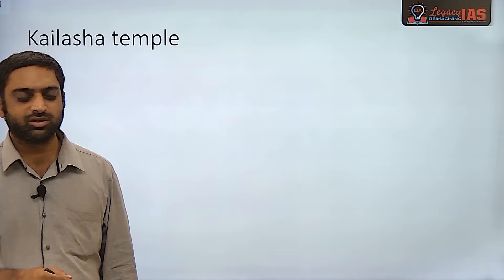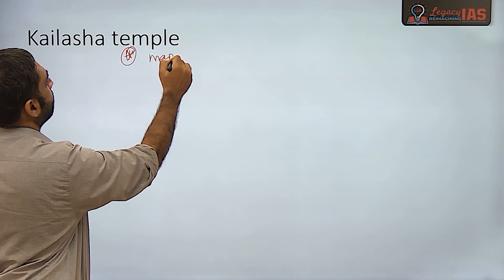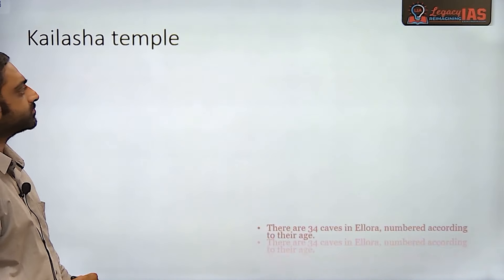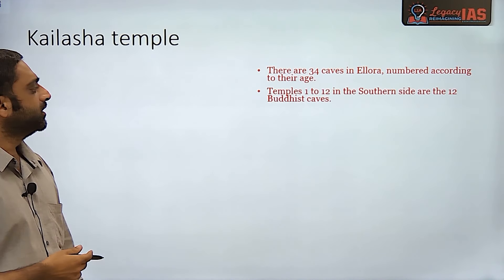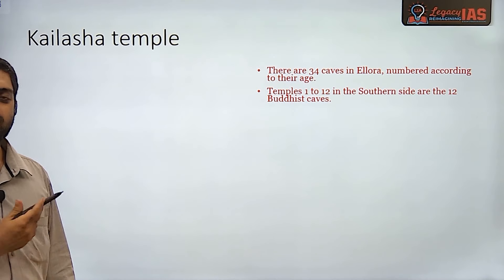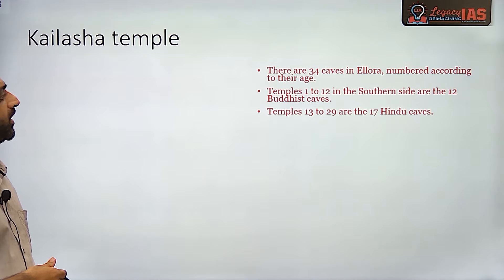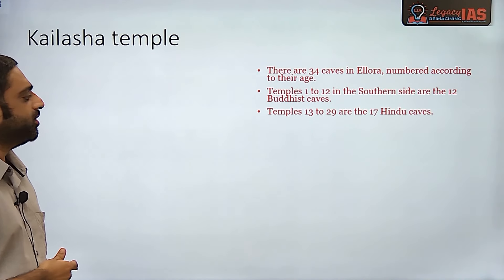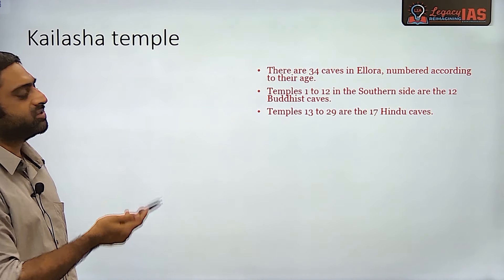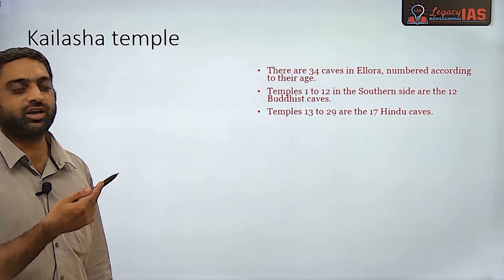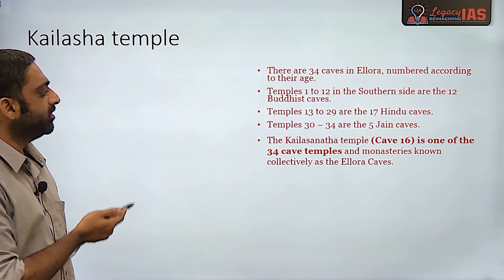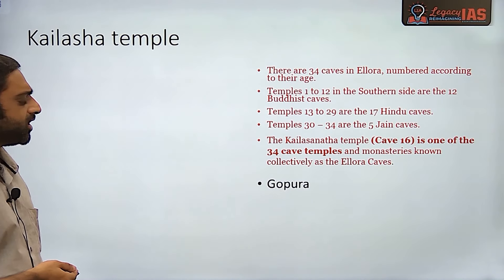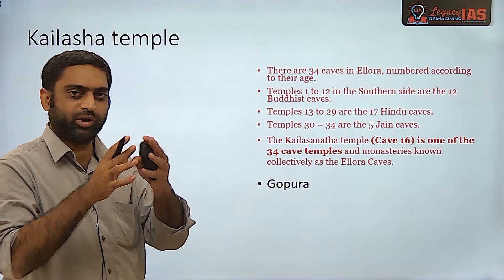Now let us look at some features of the Kailashanath temple, which can also be asked in the mains examination. The 34 caves at Ellora are numbered as per their age and include Buddhist, Jain, and Hindu structures. Caves 13 to 29 are Hindu caves, and only 5 caves are dedicated to Jain structures. For prelims, you need to know how many caves are dedicated to each religion. In Cave 16 we find the Kailashanath temple. Its first notable structural element is the Gopura — the pyramidal entrance gate.